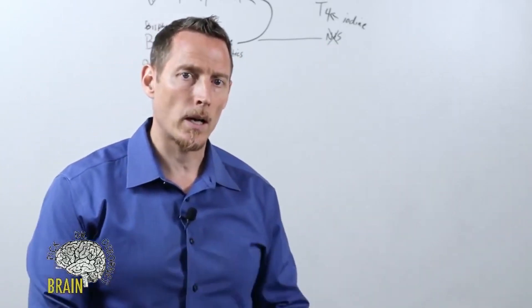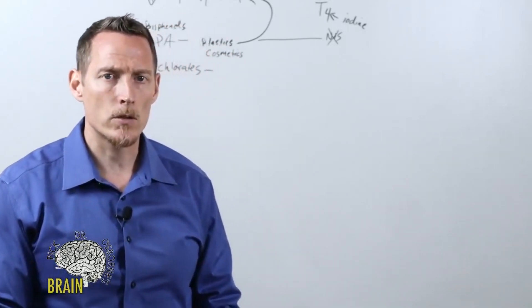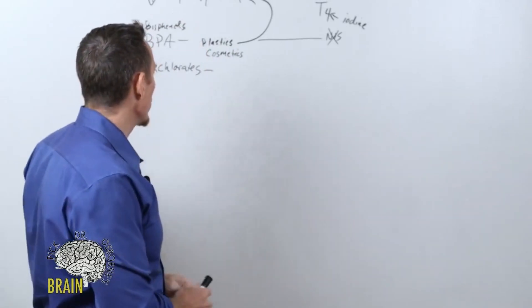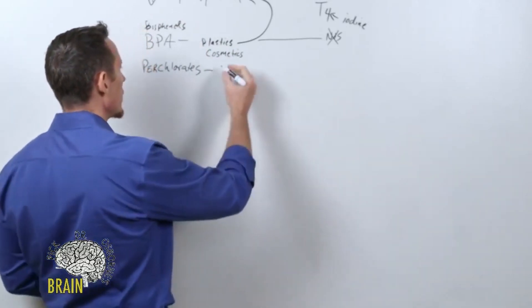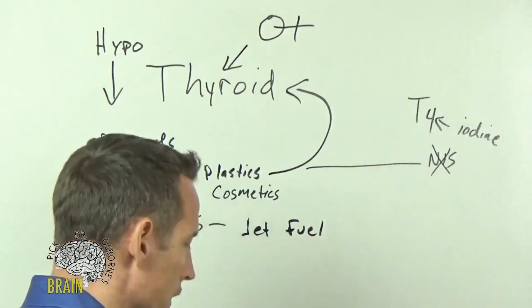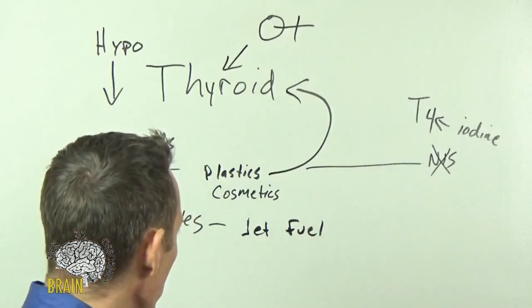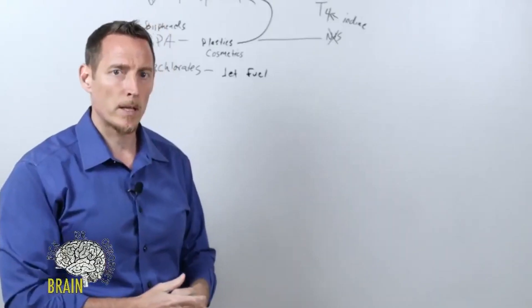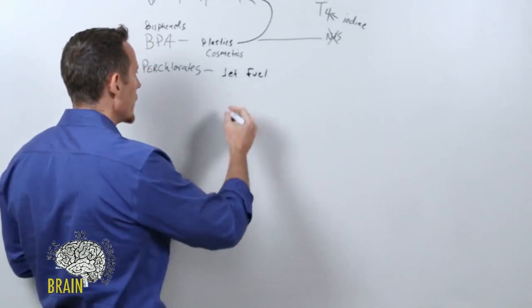If you're using a lot of plastics, it can increase hypothyroid problems by reducing your thyroid gland's ability to bring in iodine. Iodine deficiency is notorious for causing low thyroid. We also have perchlorates, commonly found in things like jet fuel. If you're not working on a runway, your biggest exposure is really just the generalized pollution.